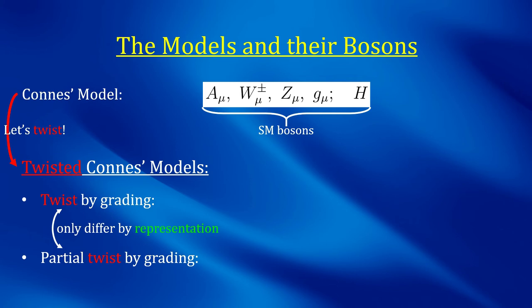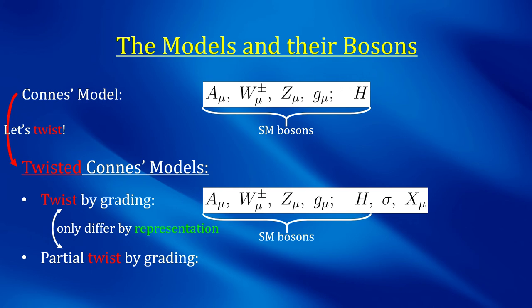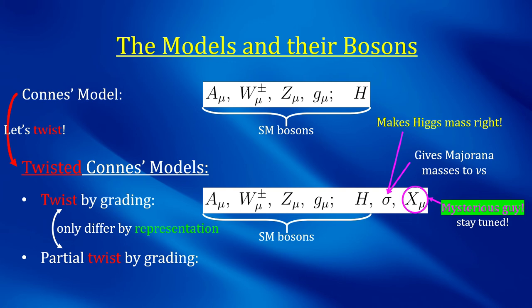In the twist by grading case, one finds once again all the standard model bosons plus two new bosons. The first one is sigma. It gives Majorana masses to the right-handed neutrinos, and most importantly, it lowers the Higgs mass to the correct value. It was exactly in order to get this sigma that the whole twisting procedure was even attempted in the first place. Then there is also a new axial vector field, x mu. This one is quite the interesting fellow. More on this in a minute.